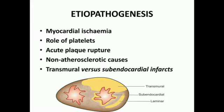Second is the role of platelets. Platelets may have a role in development of the atheromatous plaque. The plaque may undergo rupture and come into contact with sub-endothelial collagen, causing platelet aggregation. This leads to the release of chemical mediators causing thrombosis and further blockage.